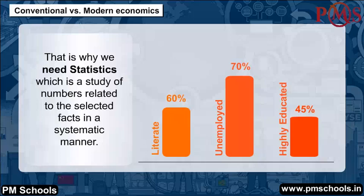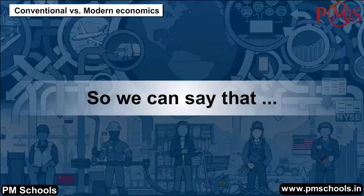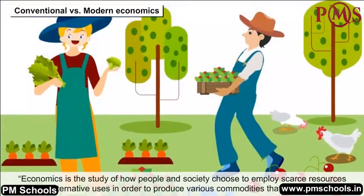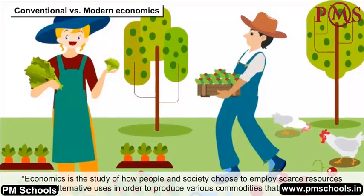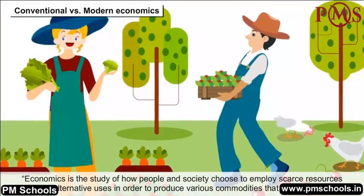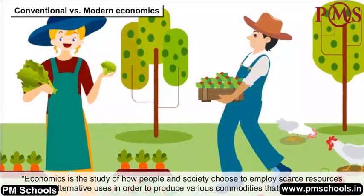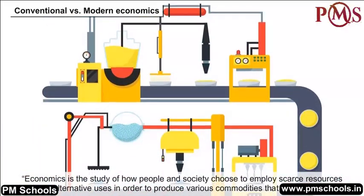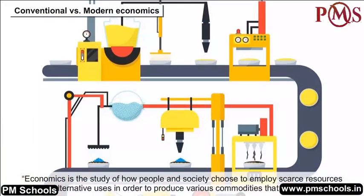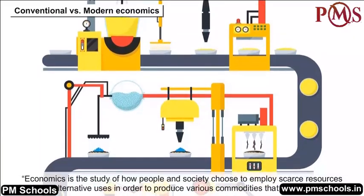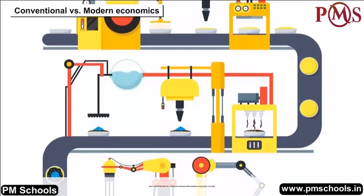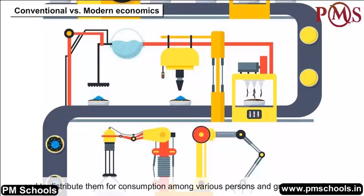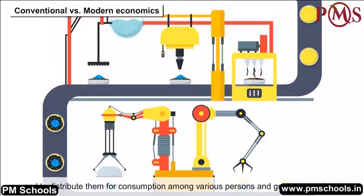That is why we need statistics, which is a study of numbers related to selected facts in a systematic manner. So we can say that economics is the study of how people in society choose to employ scarce resources that have alternative uses, in order to produce various commodities that satisfy their wants, and to distribute them for consumption among various persons and groups in society.